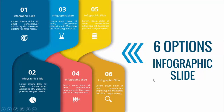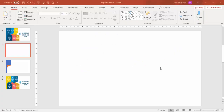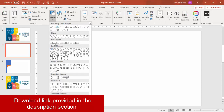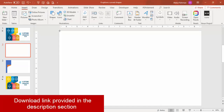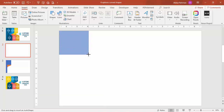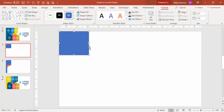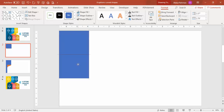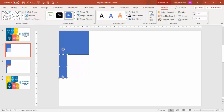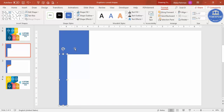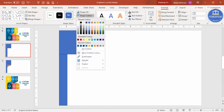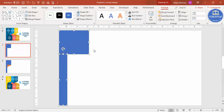Let's see how to do this in PowerPoint. Add a new slide, go to Insert, then Shapes, and select a rectangle. Draw the rectangle to about this size, then press Ctrl+D to duplicate it, put it below, and reduce the width to about this size. Drag it to the bottom of the slide, select both shapes, and set the outline to no outline.